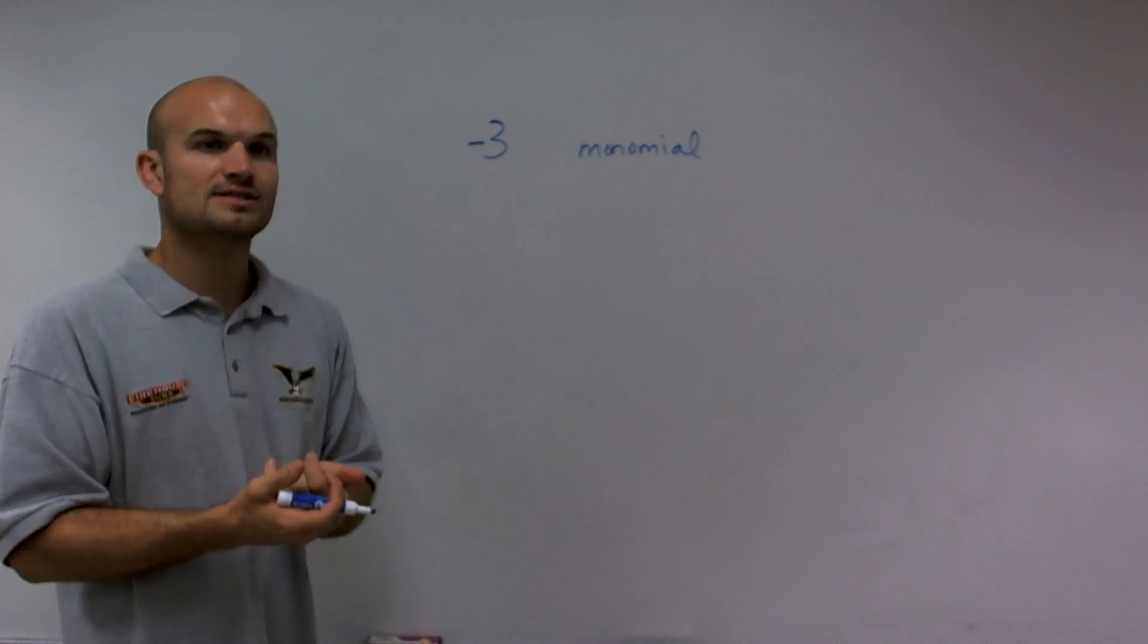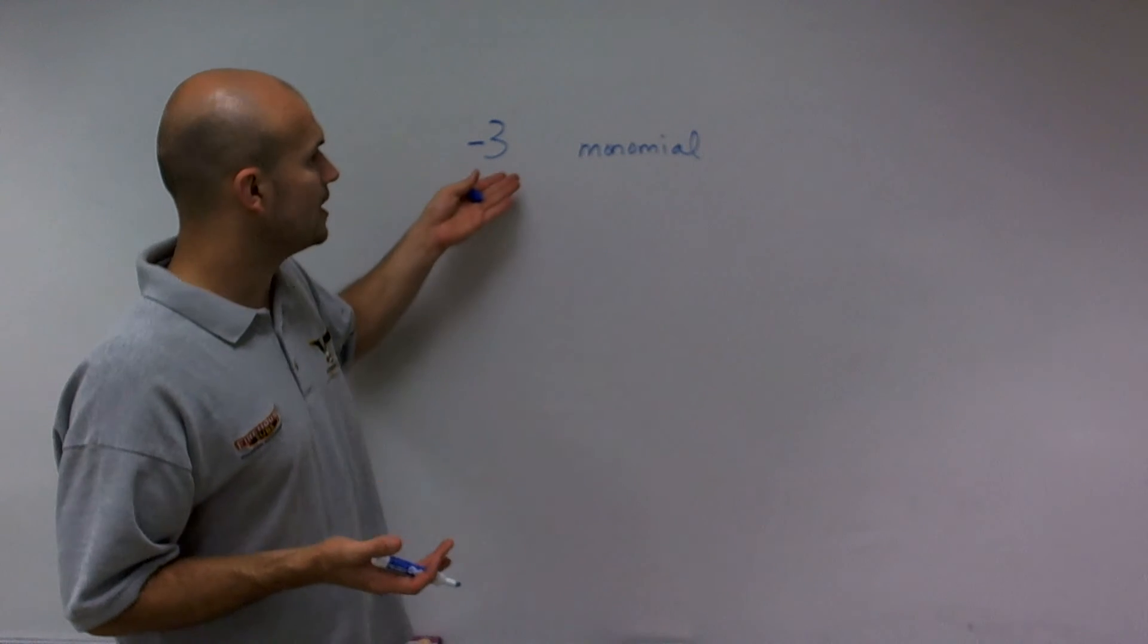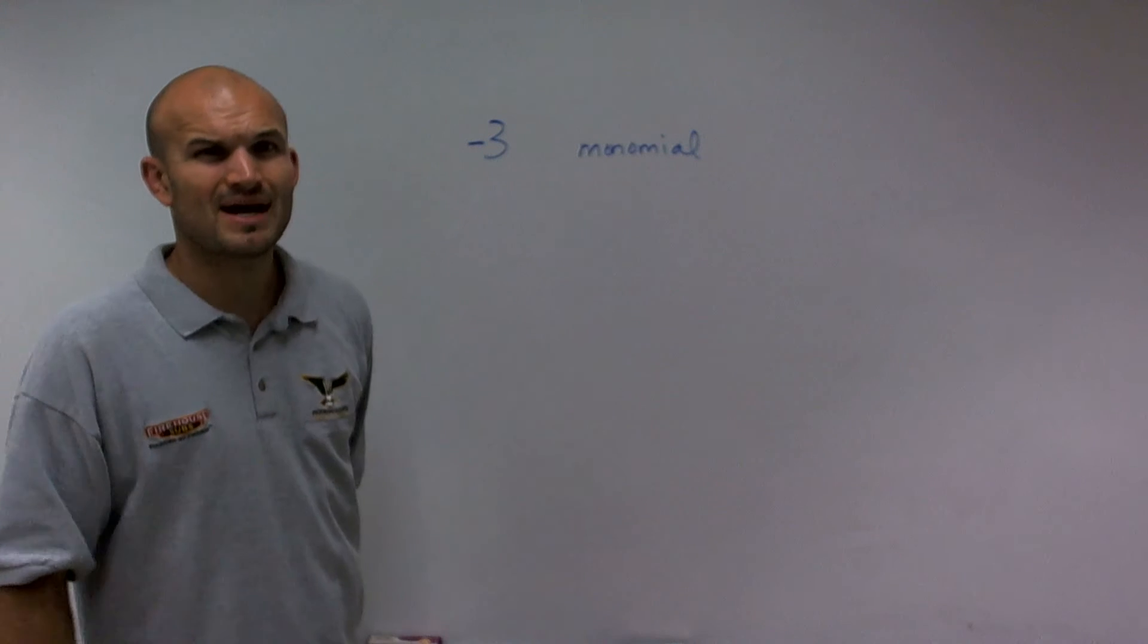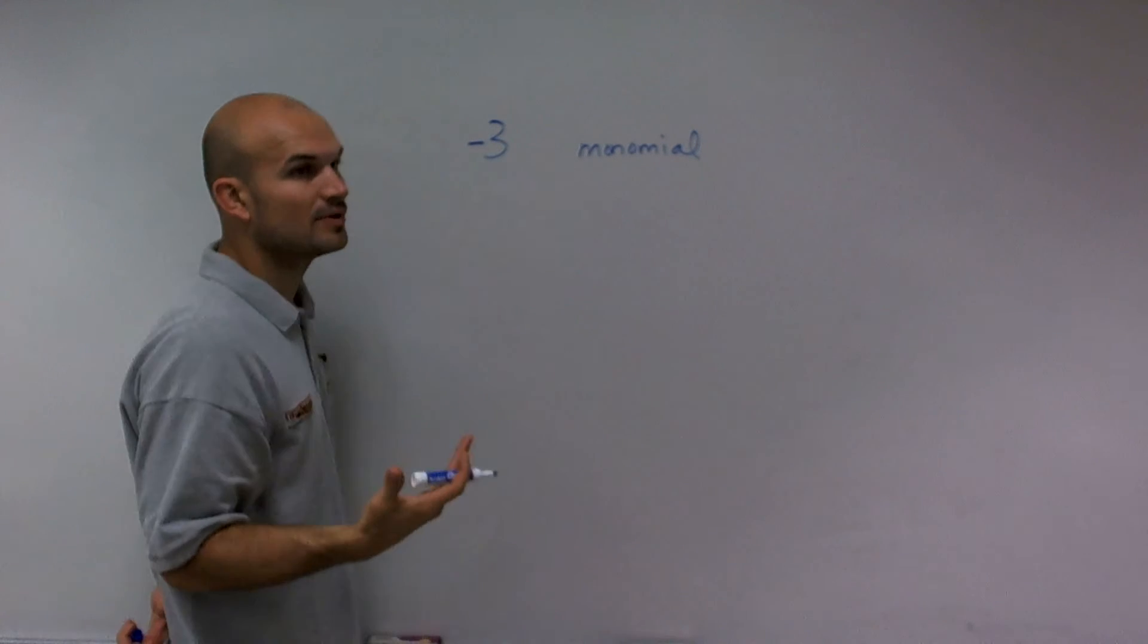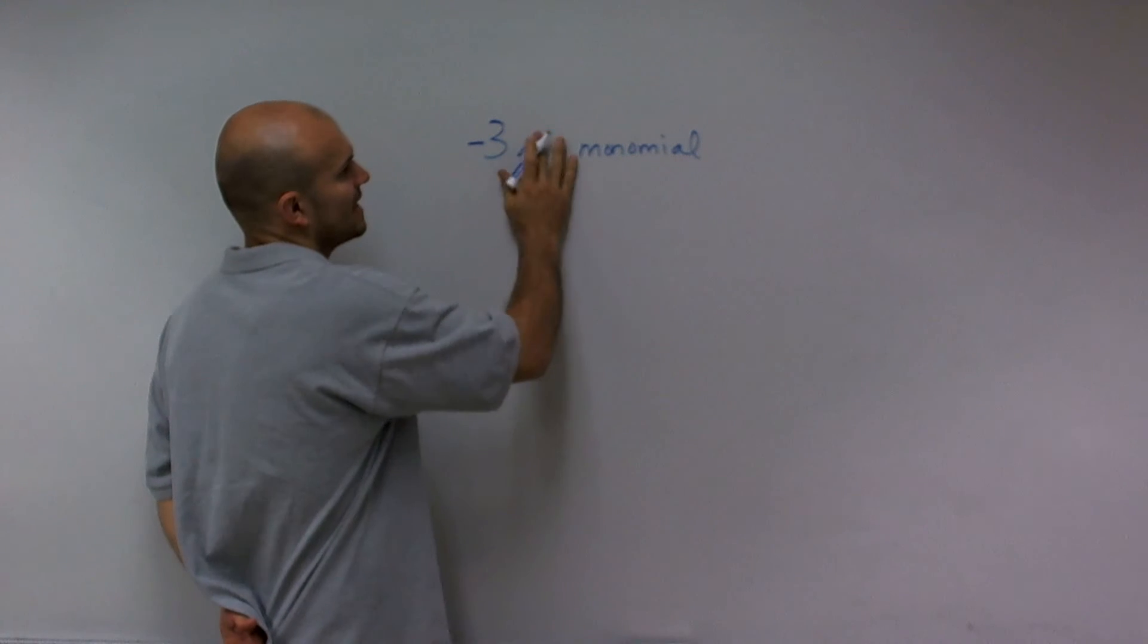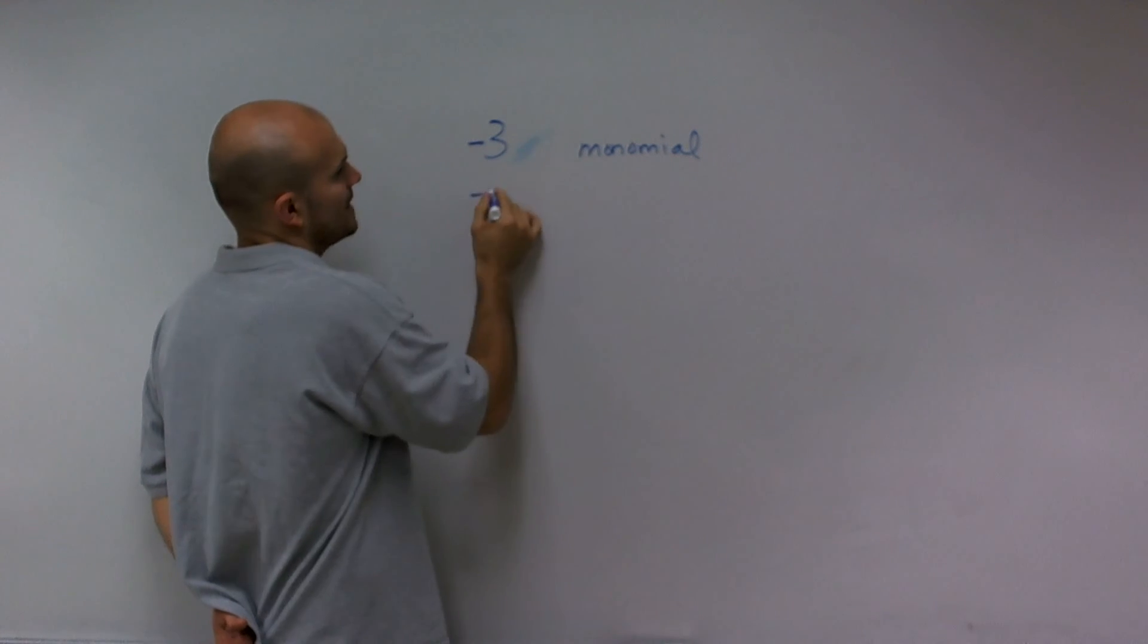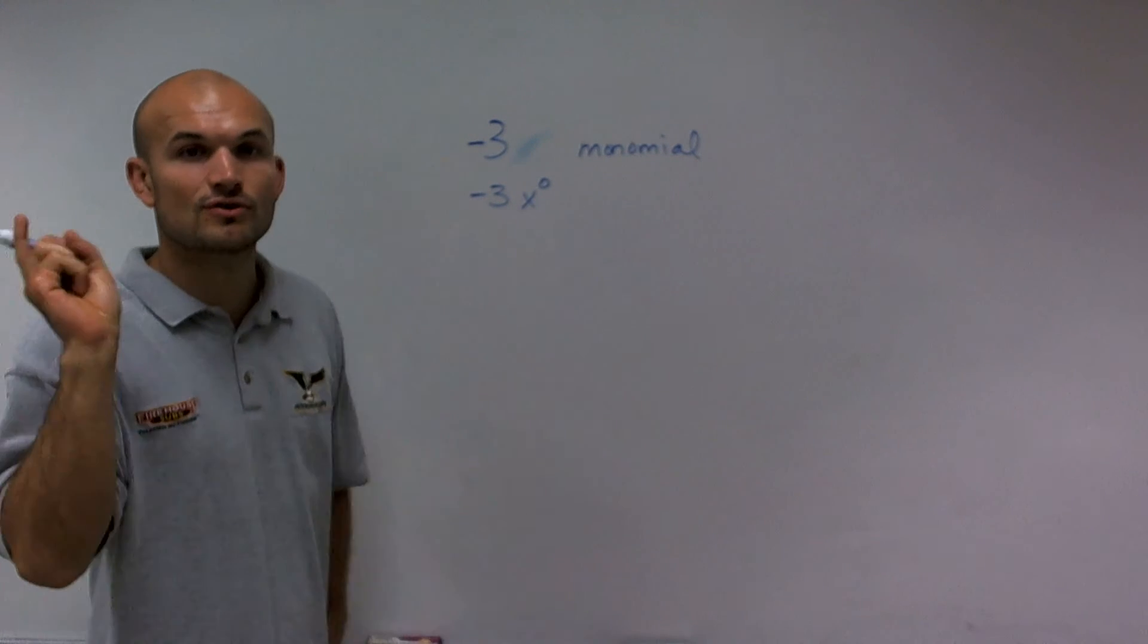Now we need to determine the degree. Remember, the degree is the largest exponent in your term. I'm not seeing an exponent here, but when you just have a number with no exponent, we can represent this as negative 3x to the 0, because x raised to the 0 equals 1.